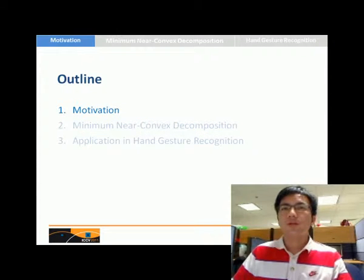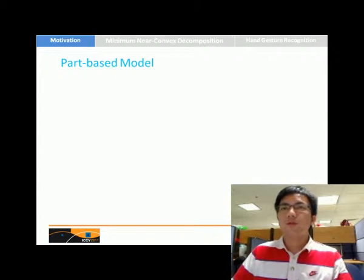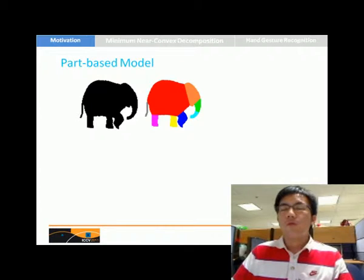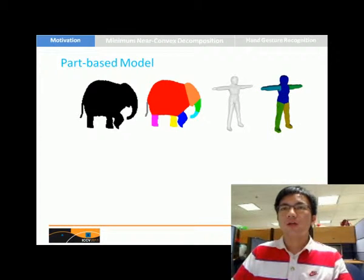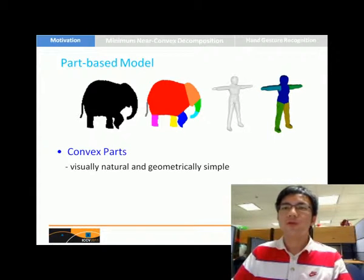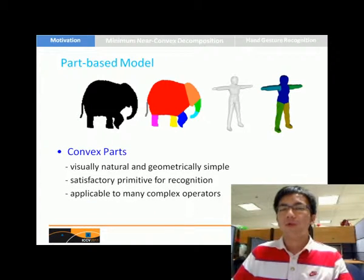The first is motivation. Part-based model is very useful for 2D and 3D shape representation because convex parts are visually natural and geometrically simple, and very important for recognition tasks. Most importantly, it's applicable to many complex operators.